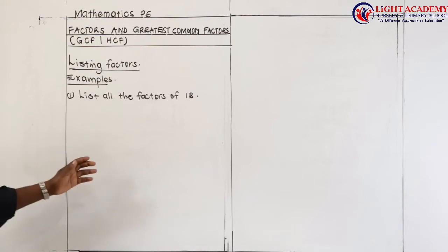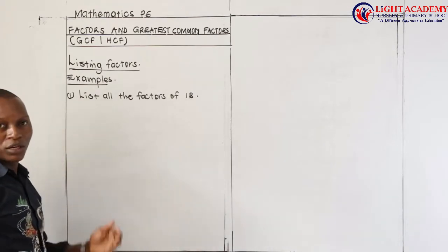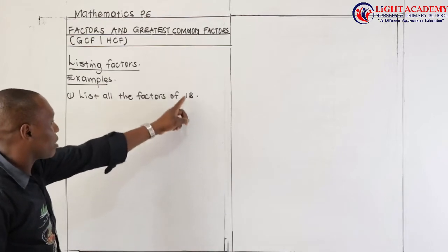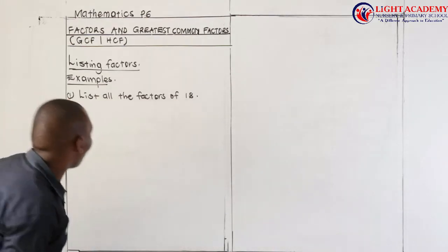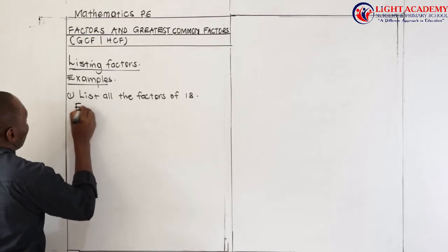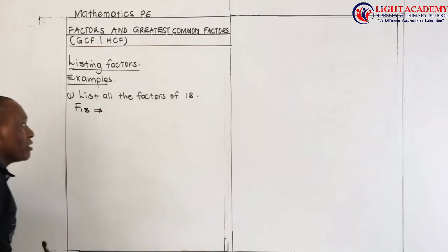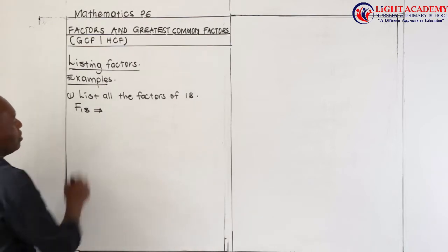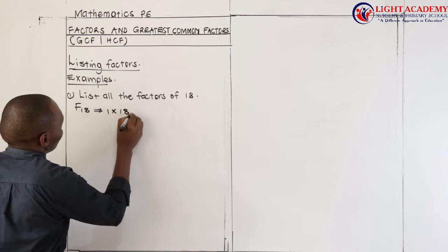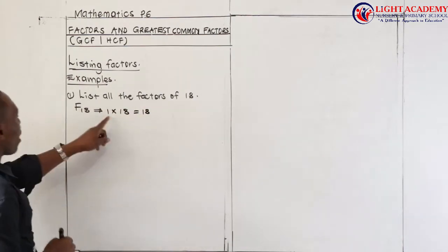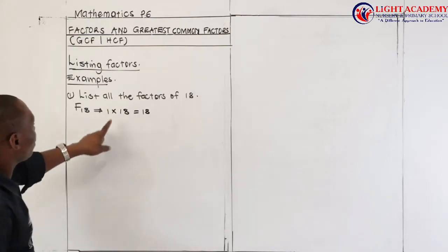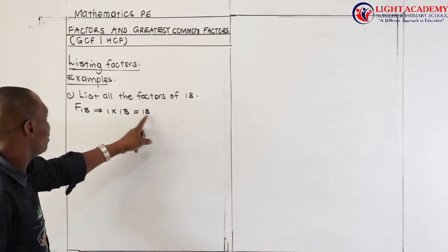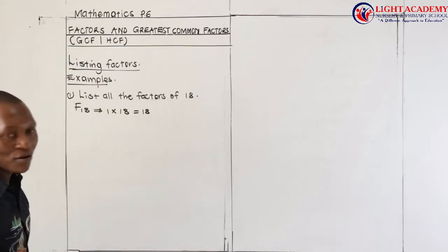At this level of Primal 6, without wasting time, we are going to refer to the multiplication table. Pick out the pairs of numbers — two of them — such that when you multiply them, the product you get is 18. So, factors of 18, F of 18, shall be equivalent to the following. I start referring to the multiplication table. The first pair: one multiplied by 18 gives 18. So 1 and 18 are factors of 18, meaning I can divide 18 by 1 and get 18, or divide 18 by 18 and get 1.